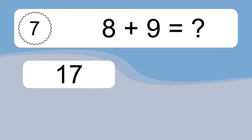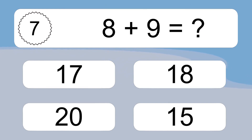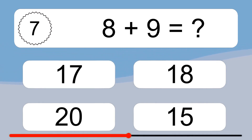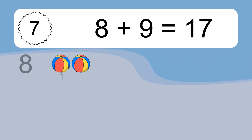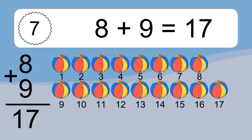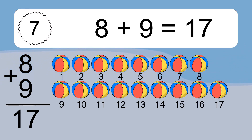8 plus 9 equals what? Let's count it: 1, 2, 3, 4, 5, 6, 7, 8, 9, 10, 11, 12, 13, 14, 15, 16, 17.